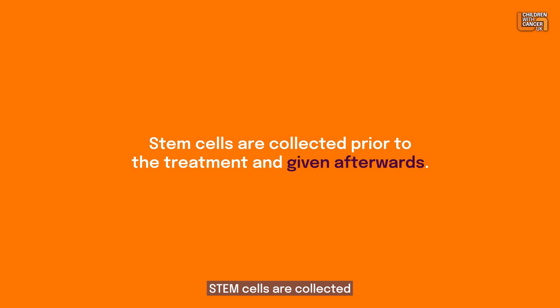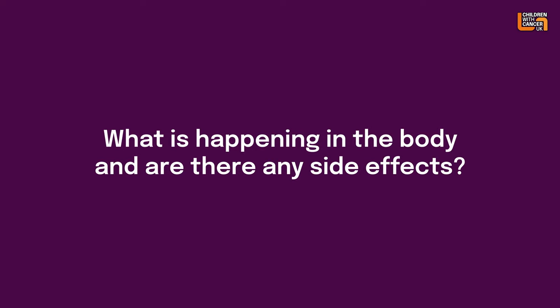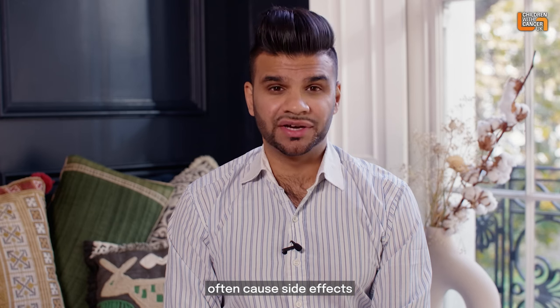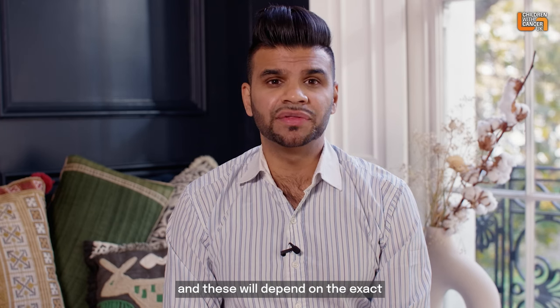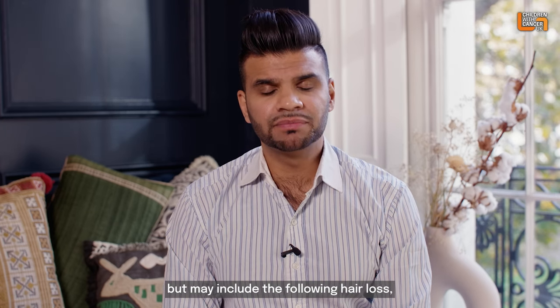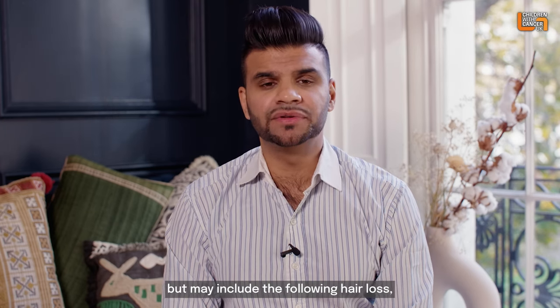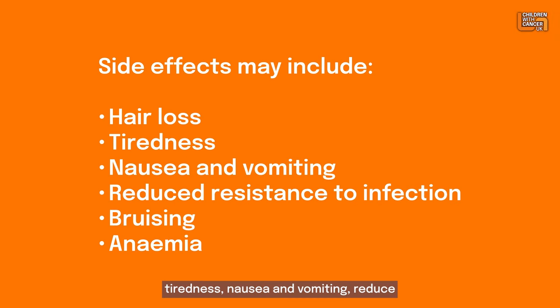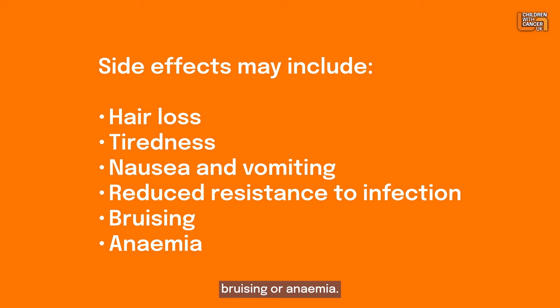Higher-dose chemotherapy can be given with stem cell rescue. Stem cells are collected prior to the treatment and given afterwards. Brain and spinal cancer treatments often cause side effects depending on the exact treatment being given, and may include hair loss, tiredness, nausea and vomiting, reduced resistance to infection, bruising or anaemia.